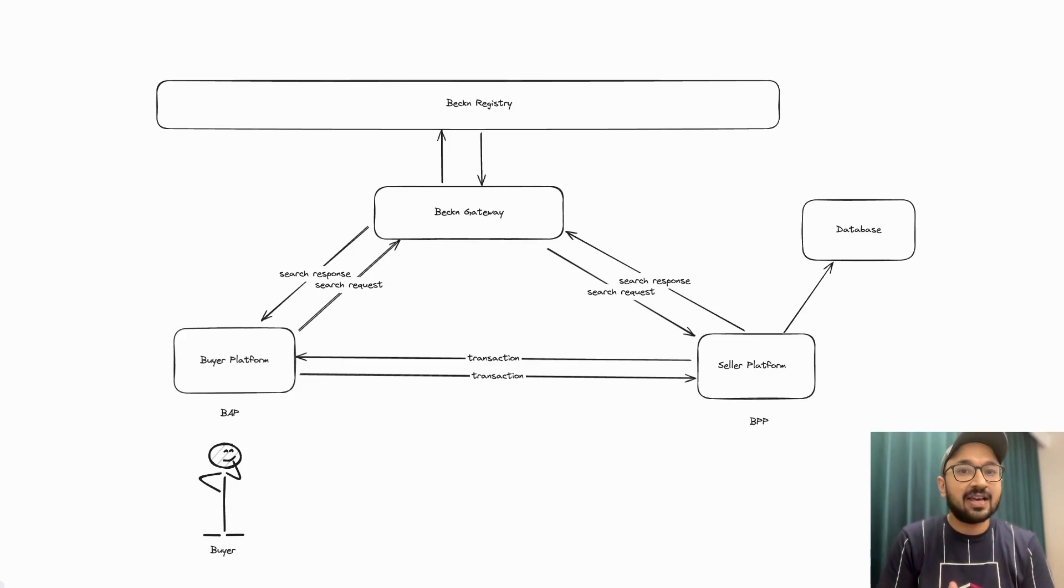Gateway has also shared the address of the BAP with BPP. From now on, BPP can talk directly to BAP, a peer-to-peer communication. The first search request in the older version of Beckon was still routed via the gateway over to BAP, but in the newer versions, the BPP can talk directly to BAP without the need of the gateway.